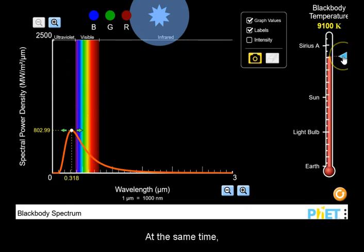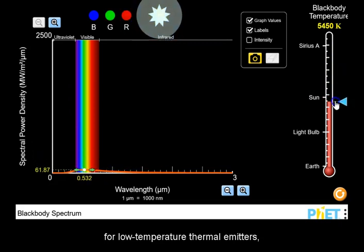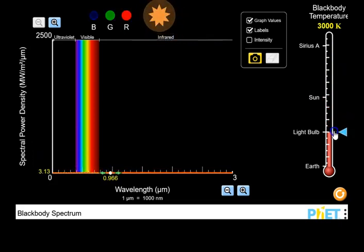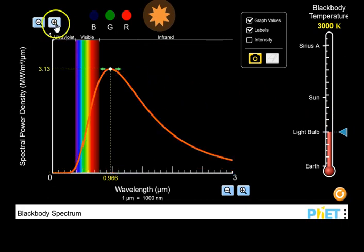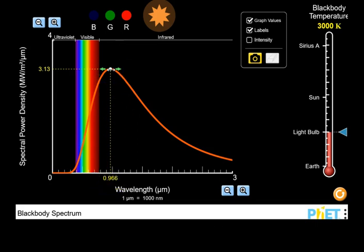At the same time, for low temperature thermal emitters, whose peak of maximum emission is in the infrared, still emit quite a lot of visible light, and hence will look red.